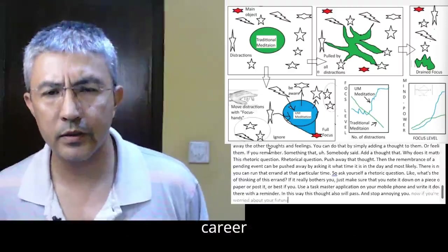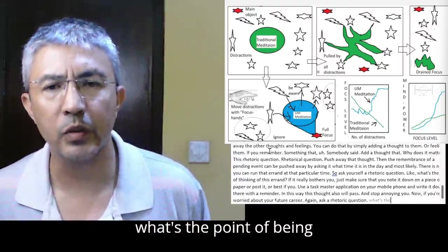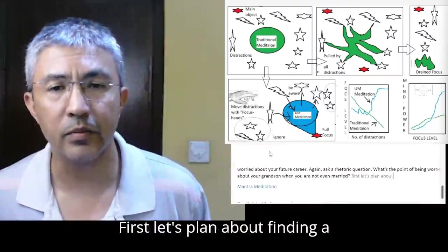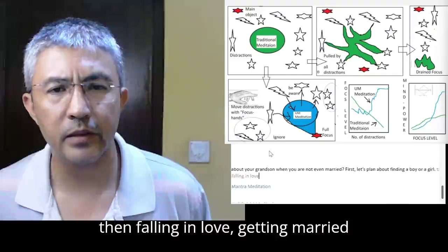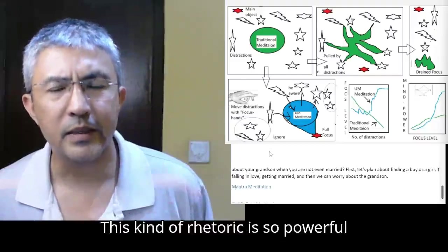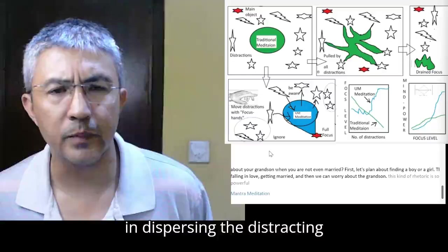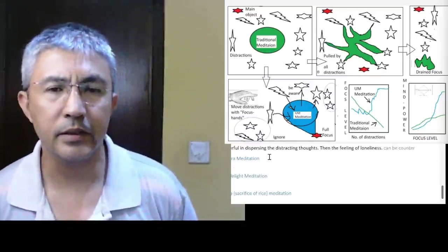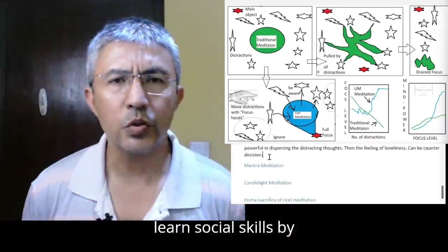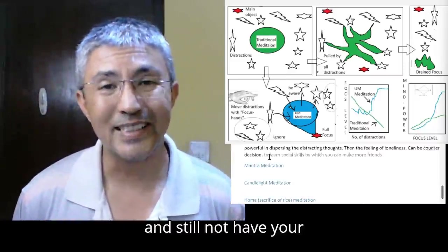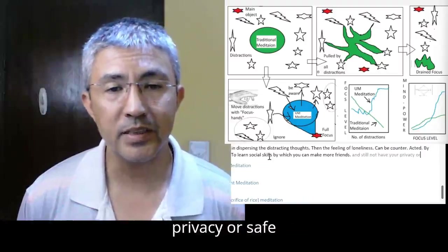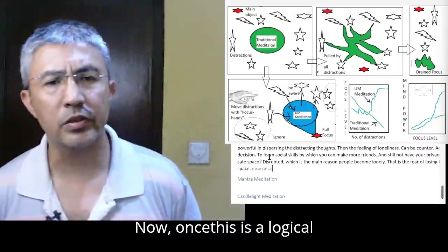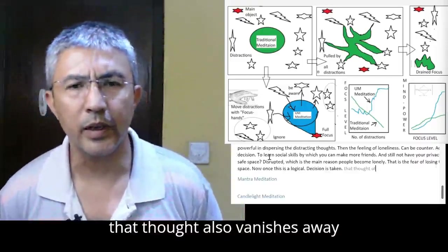Now, if you're worried about your future career, again, ask a rhetoric question. What's the point of being worried about your grandson when you are not even married? First, let's plan about finding a boy or a girl, then falling in love, getting married, and then we can worry about the grandson. This kind of rhetoric is so powerful in dispersing the distracting thoughts. Then the feeling of loneliness can be counteracted by a decision to learn social skills by which you can make more friends and still not have your privacy or safe space disrupted. Once this logical decision is taken, that thought also vanishes away.